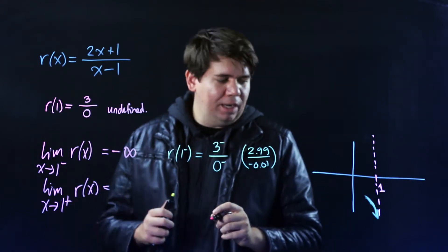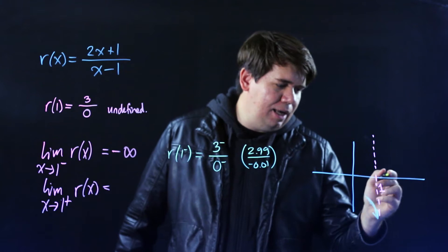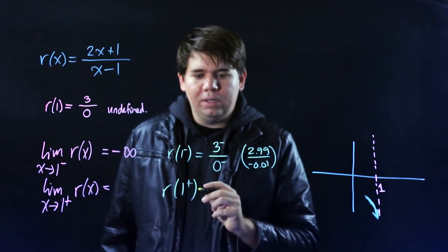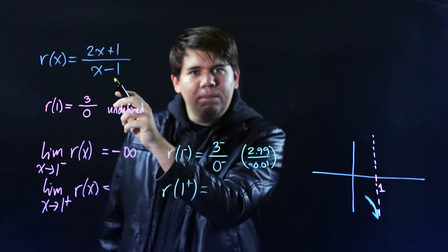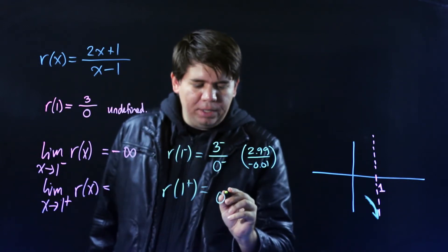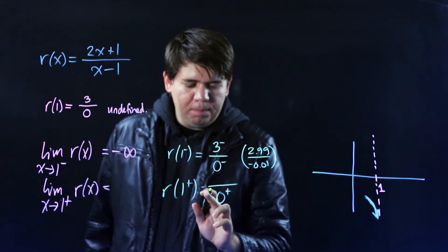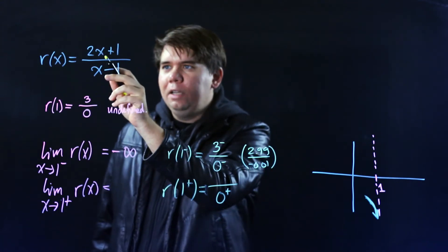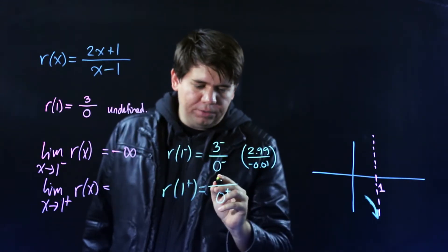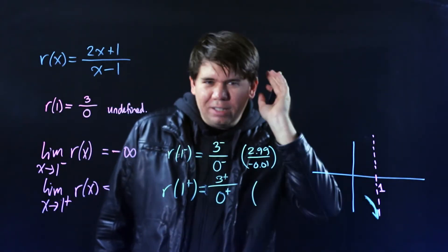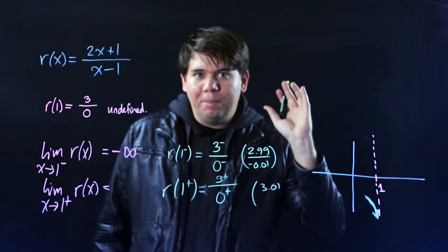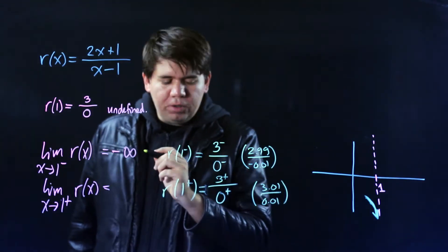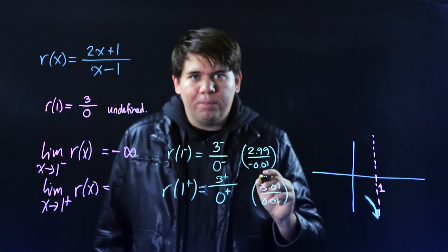How about when I approach 1 from the right? Let's plug in something a little bit bigger than 1. On the bottom, subtracting 1 gives something a little bit bigger than 0. On top, the result is a little bit bigger than 3. So this is something like 3.01 divided by a tiny positive number like 0.01 — and as we move closer to 1 the denominator gets even smaller, like 0.001.